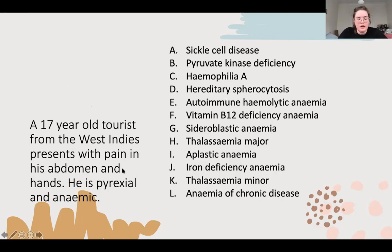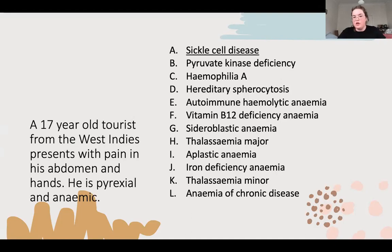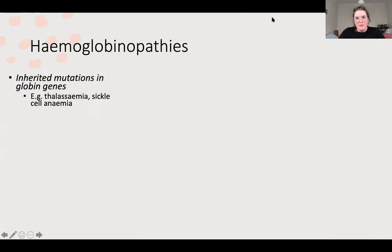Another question: 17-year-old tourist from the West Indies presents with pain in his abdomen and hands, pyrexial and anaemic. This is sickle cell disease. The background being typical, and pain in the abdomen and in the small vessels of the hands in the setting of a fever is typical of a sickle cell crisis. These are both types of haemoglobinopathies - essentially when you've inherited something that mucks up your haemoglobin.